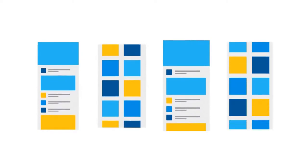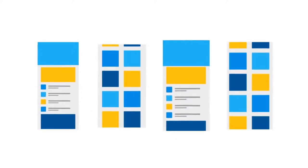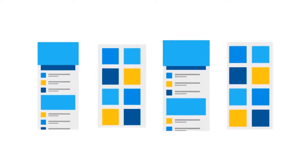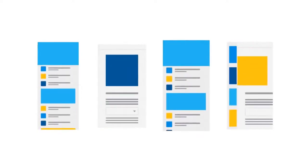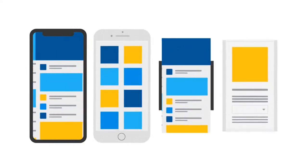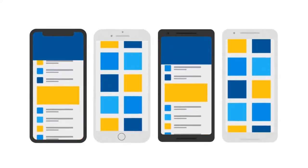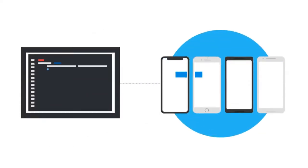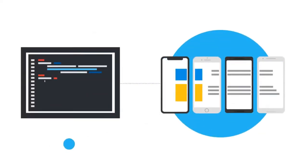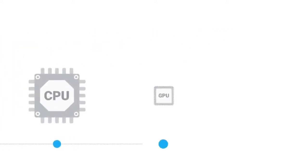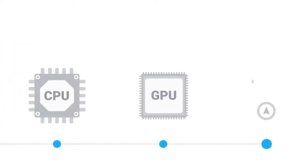Flutter is Google's mobile UI framework that provides a fast and expressive way for developers to build native apps on both iOS and Android. Apps and interfaces made with Flutter are built from a single code base, compiled directly to native ARM code, use the GPU, and can access platform APIs and services.